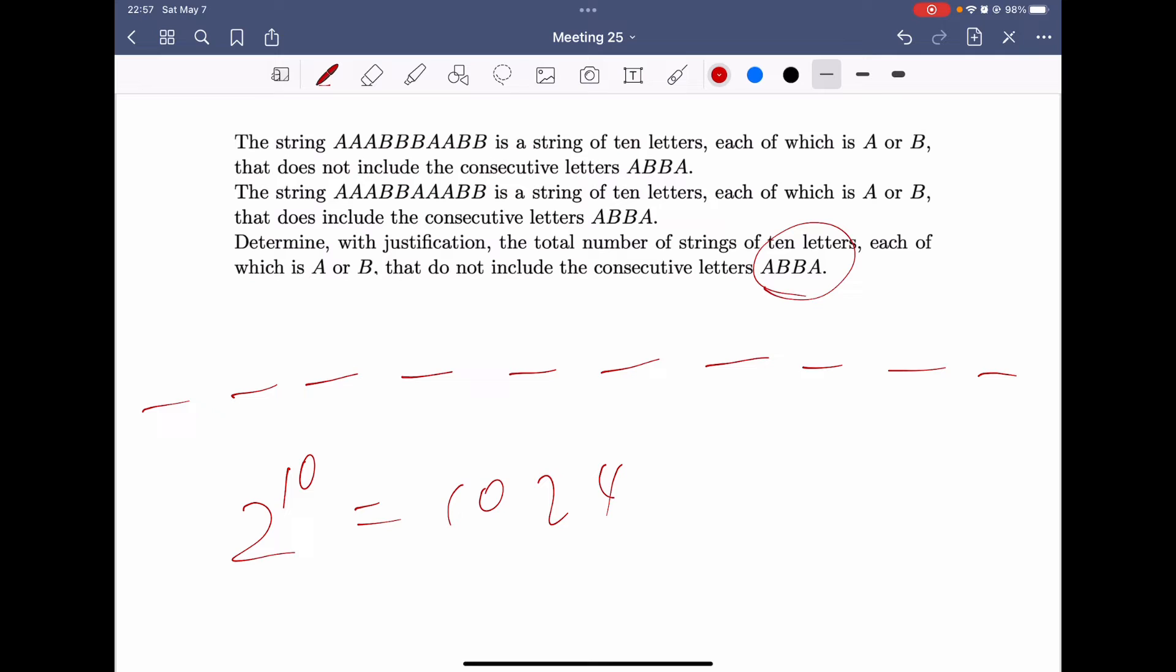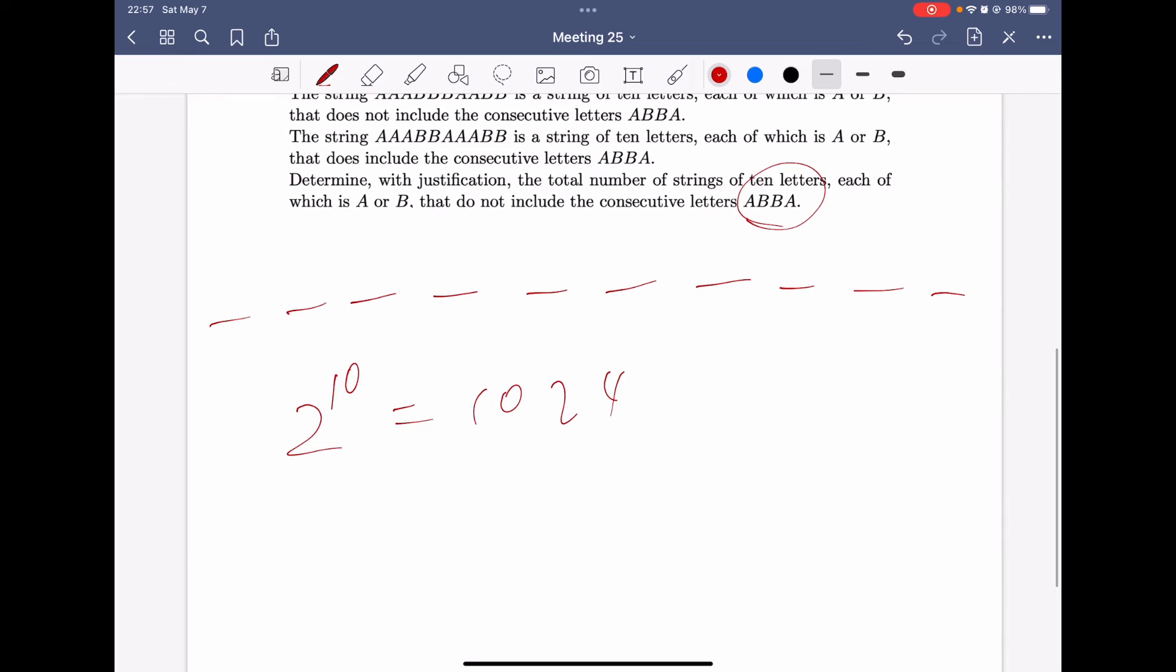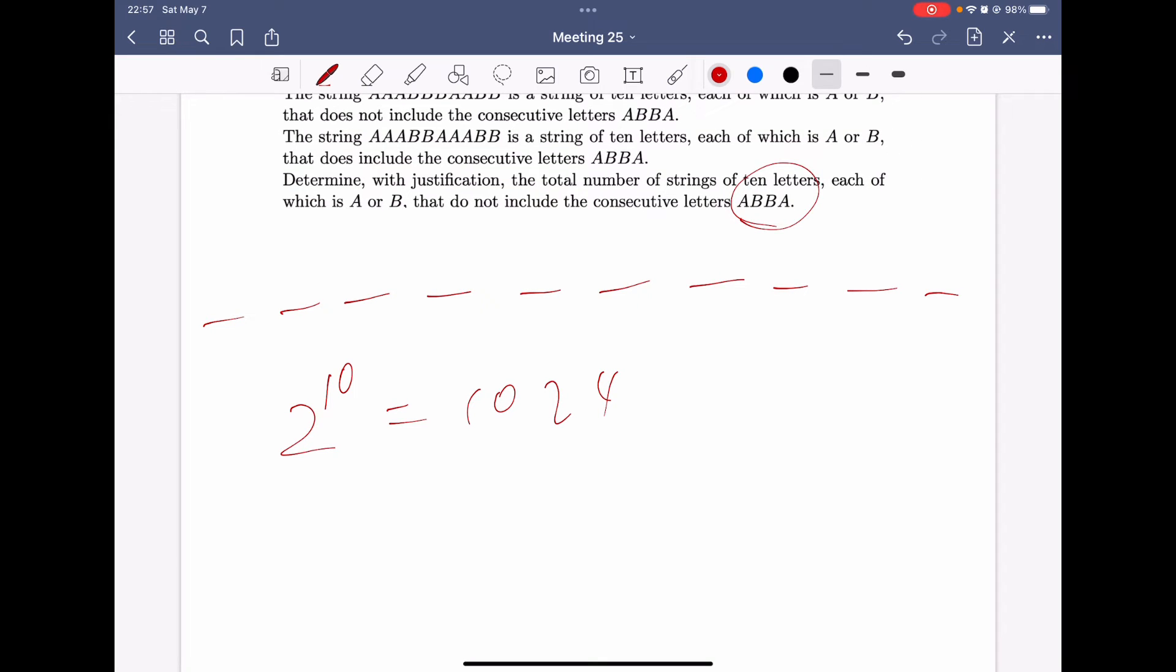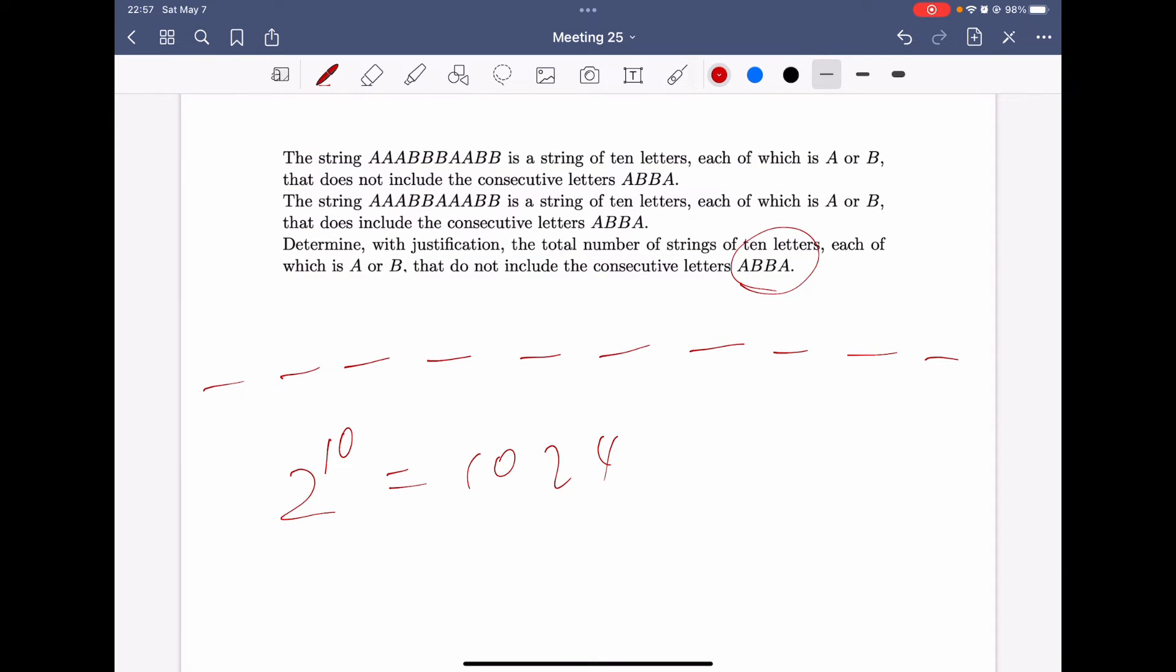And how many strings are there in total that are composed of A or B? There are 2 to the power of 10, which is 1024. Because every digit, it could be either A or B, so there are two choices for each digit, and there are 10 digits in total, so it's 2 to the power of 10. And let's see how many situations that A, B, B, A shows up. So, A, B, B, A can show here, also it can show here, and also it can show here.